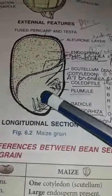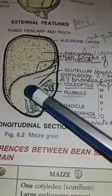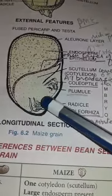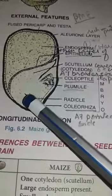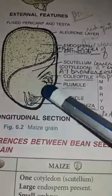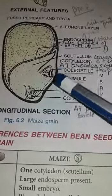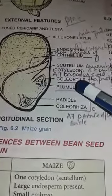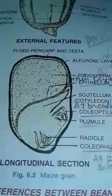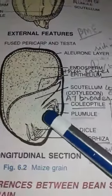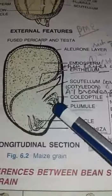The scutellum chamber contains the embryo. The embryonic chamber has the radicle present at the broader end and the radicle at the tapering side of the seed structure.